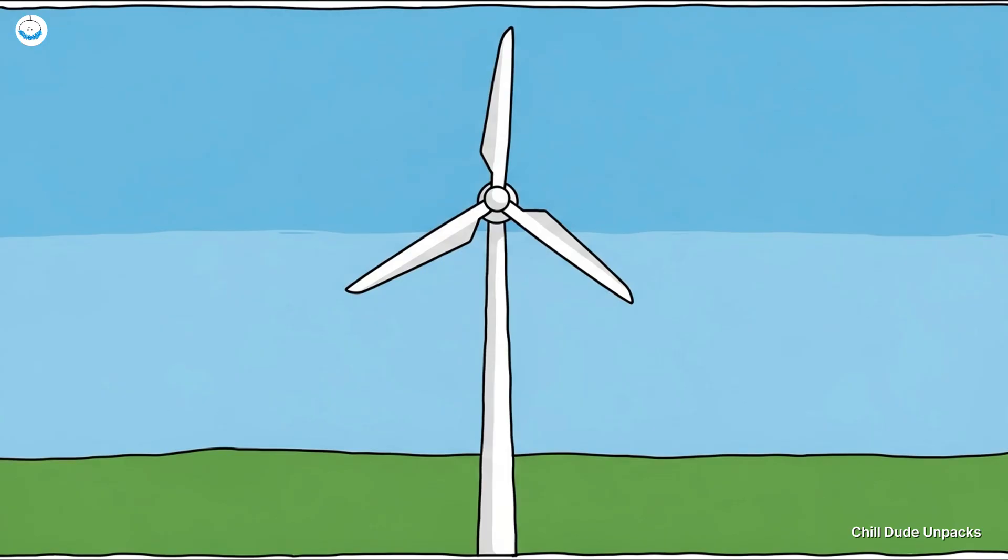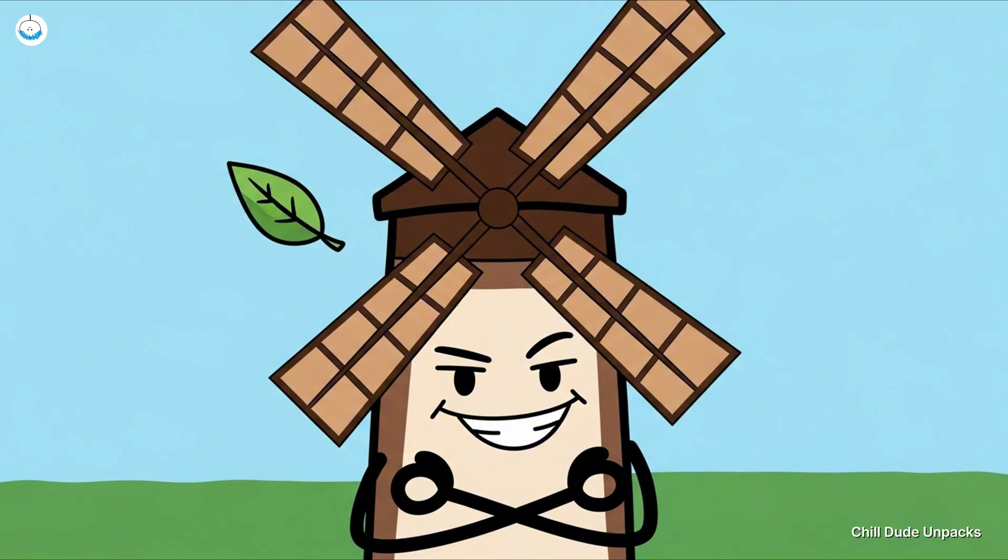Today's sleek wind turbines may look like sci-fi props, but the concept is still the same: capture moving air, turn it into motion, turn that motion into something useful. Ancient windmills were basically the Prius of their time—efficient, eco-friendly, and a little bit smug about it.